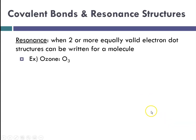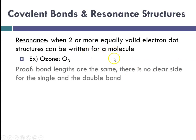So another thing we talk about with covalent bonding is something called a resonance structure. And a resonance structure is anytime you could draw two or more equally valid electron dot structures. And so if you can do that, and an example is ozone, then you would call those resonance structures. So the proof, how do we know that this is the case, is that we can measure the bond lengths. And if the bond lengths are the same, there's no clear side where a single bond is versus a double bond. And a double bond would be shorter than a single bond.